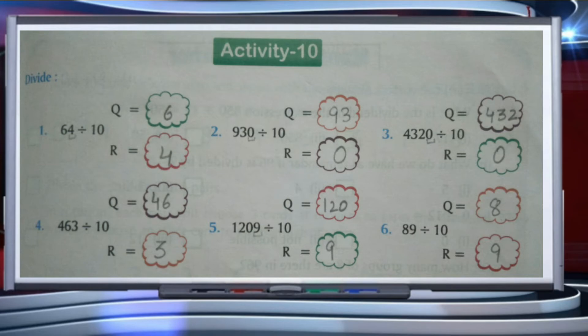If we divide 463 by 10, the remainder is 3 because 3 is in the ones place, and 46 is the quotient. When we divide 1209 by 10, 9 is the remainder and 120 is the quotient. For 89 divided by 10, 9 is the remainder and 8 is the quotient.